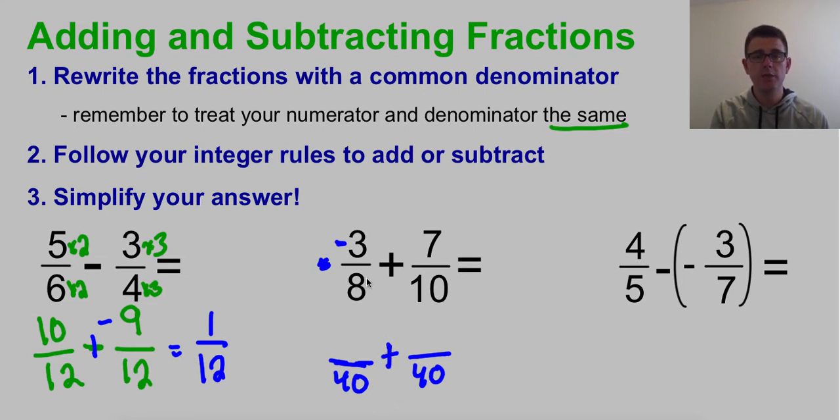To get from 8 to 40, I multiply times 5. So I'm going to do the same thing up top and I get negative 15. Remember the negative just tags along. To get from 10 to 40, I multiply times 4. So I'm going to do the same thing here and that gives me 28.